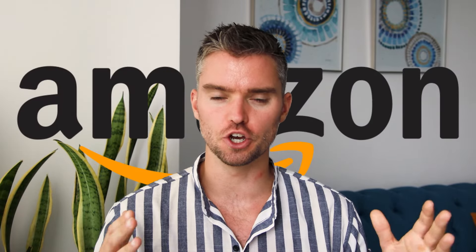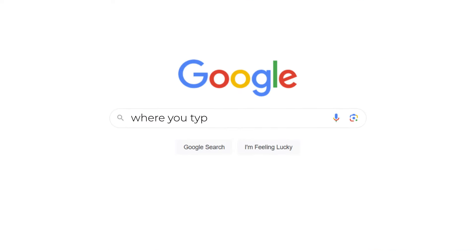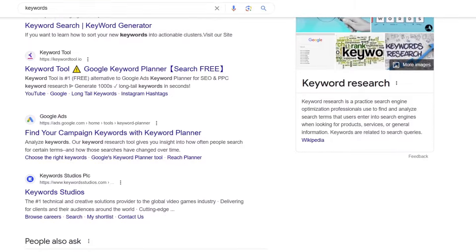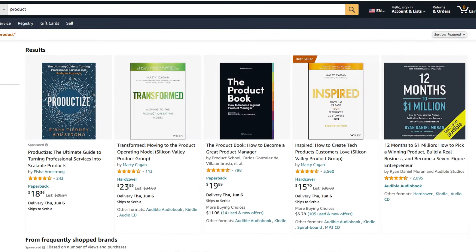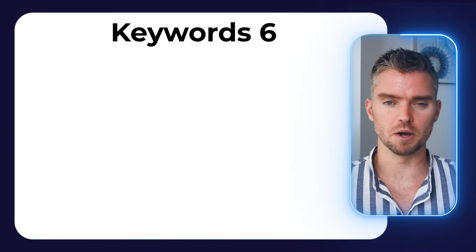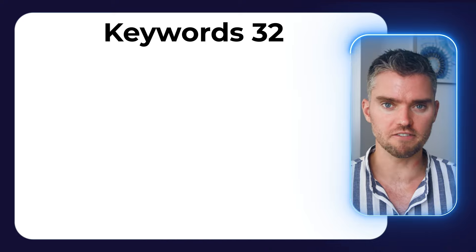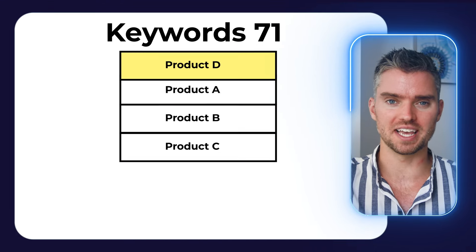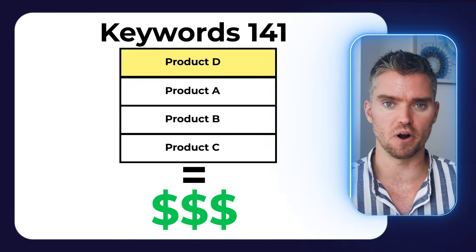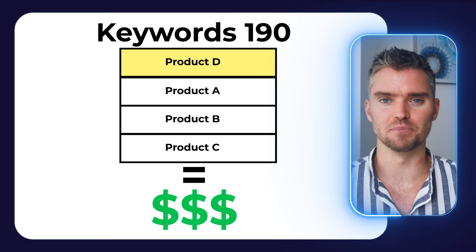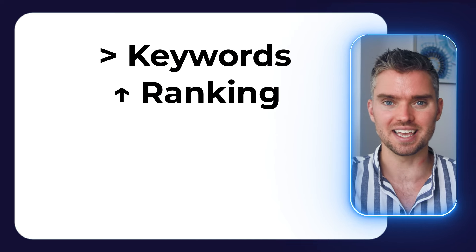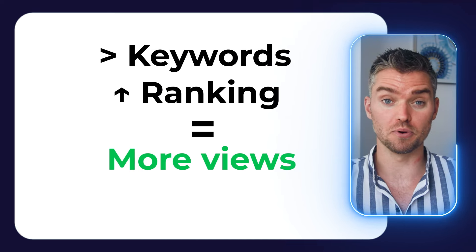Amazon is a search engine like Google or YouTube where you type in keywords to find content or, in the case of Amazon, find products. The more keywords a product on Amazon is ranking for, and the higher it's ranking on the page for these keywords, the more sales that product will make. More keywords and higher ranking equals more views — more people can see a product, click on it, and ultimately buy it. Tracking and knowing your Amazon keyword ranking is extremely important to do on a weekly basis.